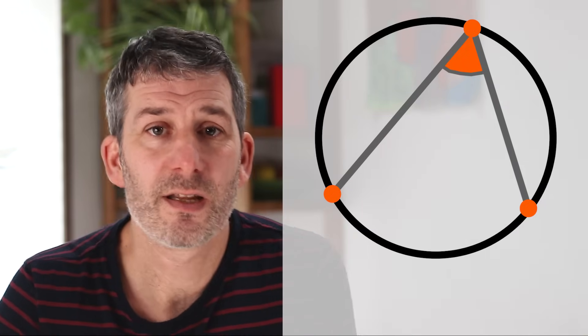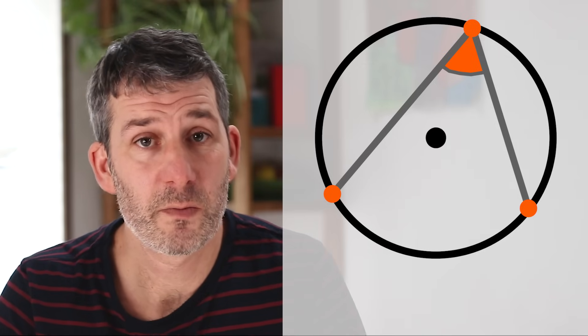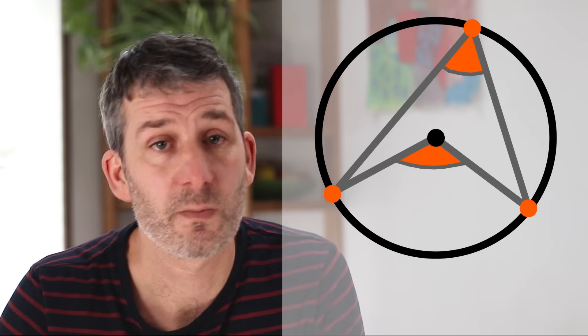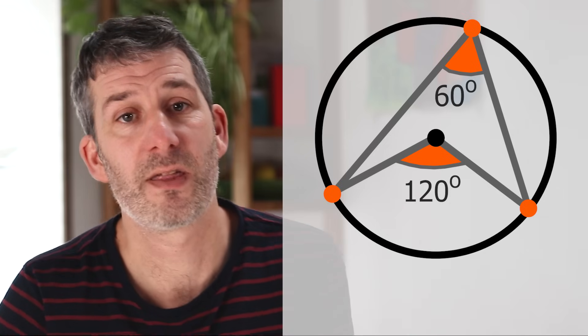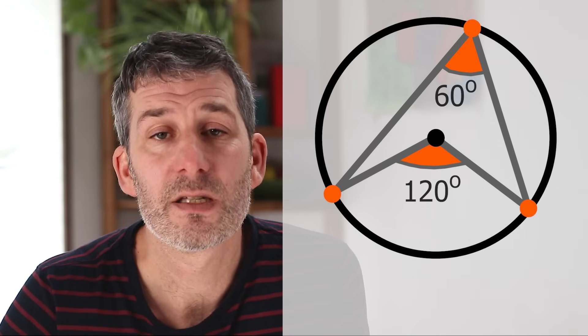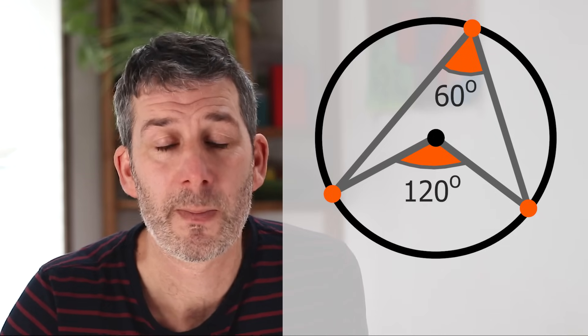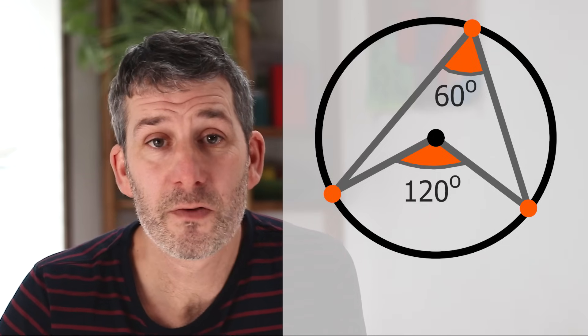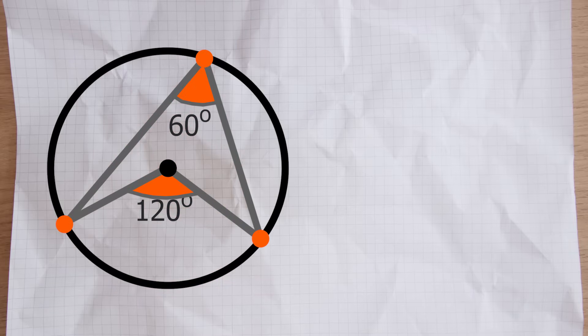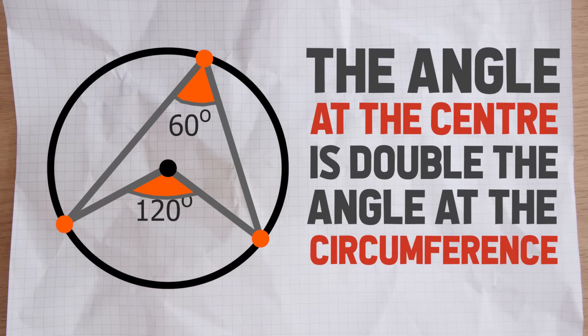If we create an angle at the centre of the circle coming from those same two points - in other words an angle subtended at the centre of the circle by the same arc - then the angle created at the centre will always be double the one at the circumference. Always. That's our first theorem: the angle subtended by an arc at the centre is twice the angle subtended at the circumference. We can simplify it to: the angle at the centre is double the angle at the circumference, and that is always the case.